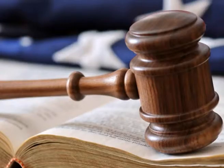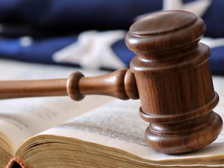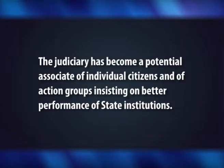The primary objective of any legal system ought to be guaranteed enforcement of rights as vested by the constitution and the laws made thereof. Judicial review is designed to prevent the cases of abuse of power and neglect of duty by public authorities. It becomes essential to first prove that a right exists, then that the particular right has been violated and therefore present justifiable claims that a remedy is warranted. The judiciary has become a potential associate of individual citizens and of action groups insisting on better performance of state institutions, and a byword for judicial involvement in social, political and economic affairs.